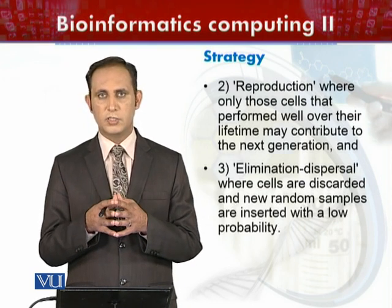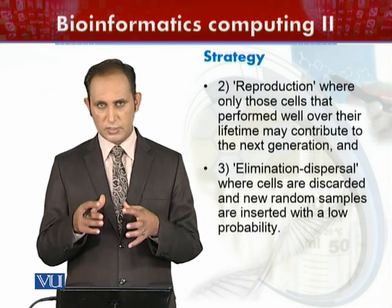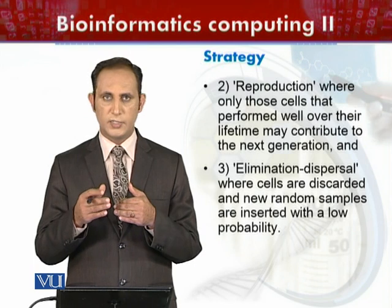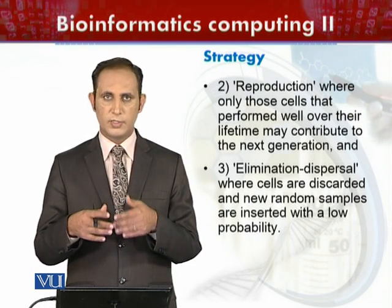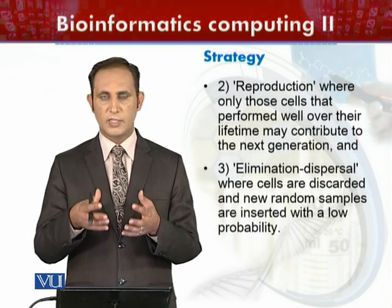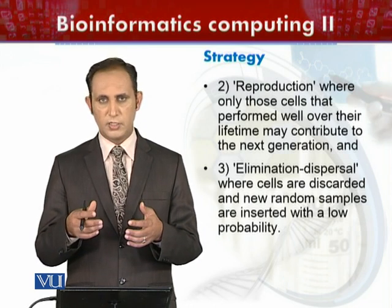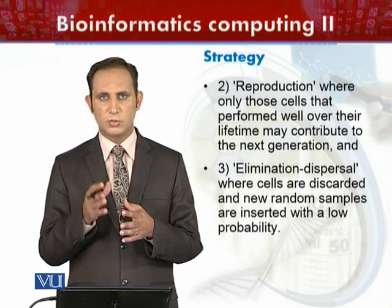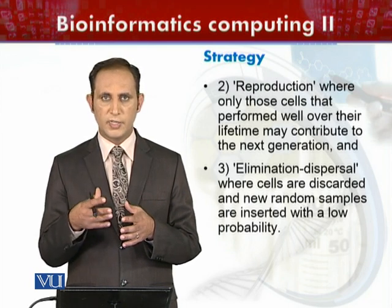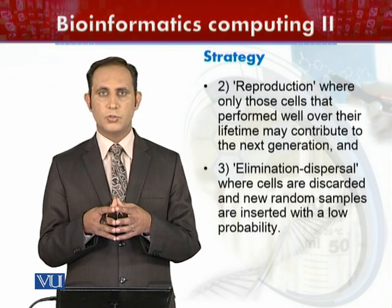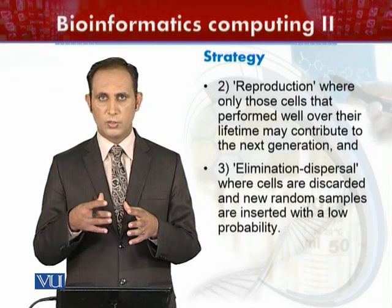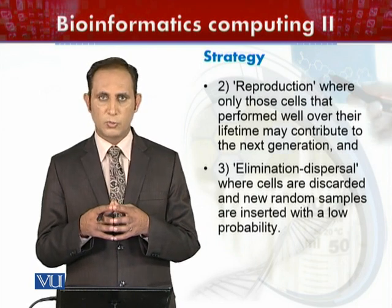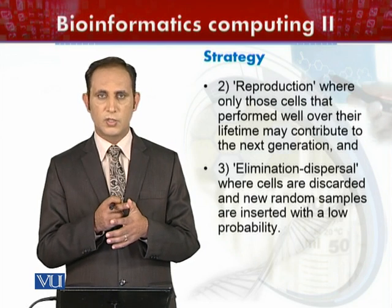The third process is elimination and dispersal, in which cells that are less fit are discarded. Overall, the whole algorithm uses a specific strategy based on these three basic processes in series: number one, chemotaxis; number two, reproduction; and number three, elimination or dispersal.